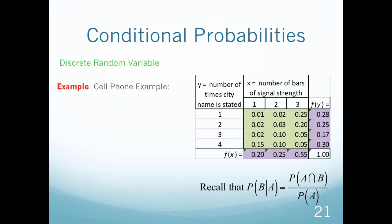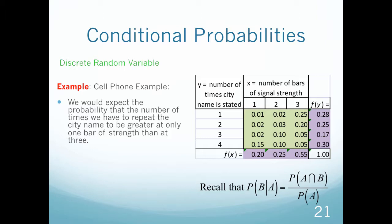Let's look at an example to see how we set this up. We're going to use our same cell phone example — the number of times a city name is stated and the number of bars of signal strength. We have all the joint probability distribution here, and the values in purple are the marginal distributions. Before we get into formulas, we'd expect the number of times we have to repeat the city name to be greater when we only have one bar of signal strength.